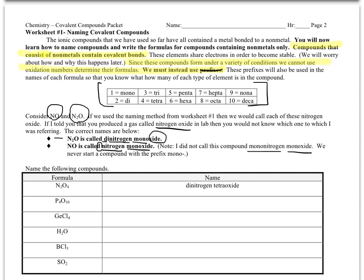If there's one of the first element, like here with one nitrogen, we just say nitrogen, not mono nitrogen. But if there's one of the second element, we do use the mono prefix—we call it monoxide. I have no really good explanation for why that is; it's just a convention.